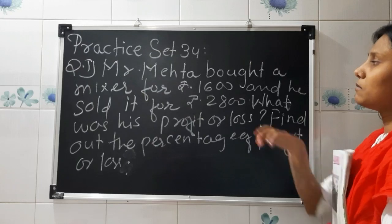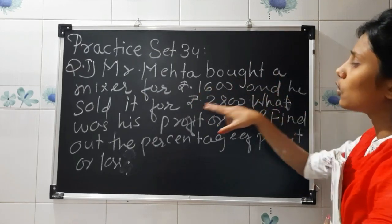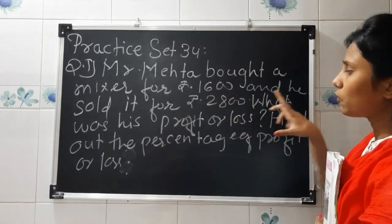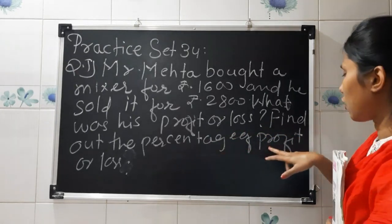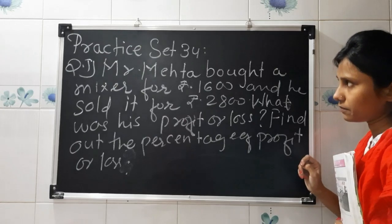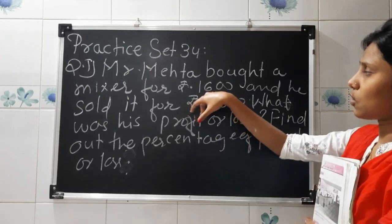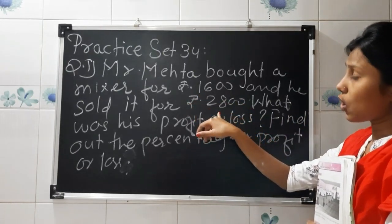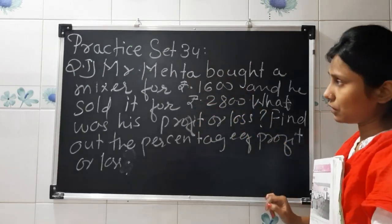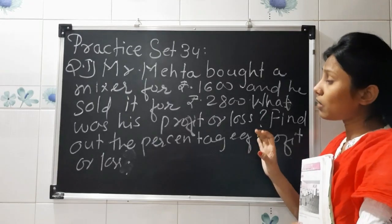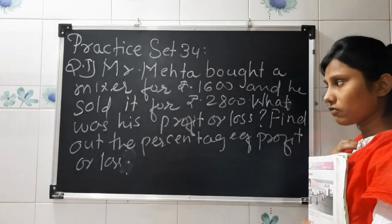You have to copy down this question. Mr. Mehta bought a mixer for rupees 1600 and he sold it for rupees 2800. What was his profit or loss? Find out the percentage of profit or loss. In the question, only two things are given — the cost price and the selling price. Based on both pieces of information, I have framed this question. You have to frame your own question for each sum and solve it.